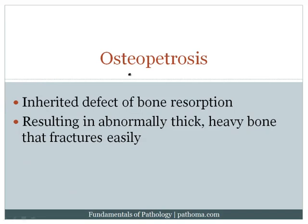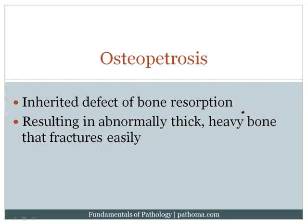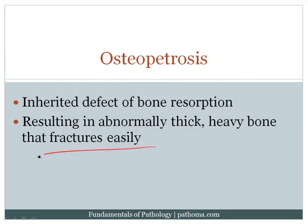Osteopetrosis is a disorder in which you have abnormally thick, heavy bone — 'petrosis' means rock-like. It arises from an inherited defect of bone resorption. Bone formation is a balance between osteoblasts, which lay down bone, and osteoclasts, which resorb bone. If you have a defect in bone resorption, you keep laying down bone but can't resorb it, resulting in abnormally thick heavy bone. Despite this, the bone actually fractures easily — like a piece of chalk: thick, but easily cracked.